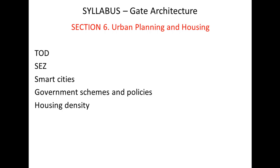Section six is about Urban Planning and Housing — including Transit Oriented Development, smart cities, and all government schemes and policies related to urban planning. You will also come across housing density problems. This section accounts for about six percent of weightage.